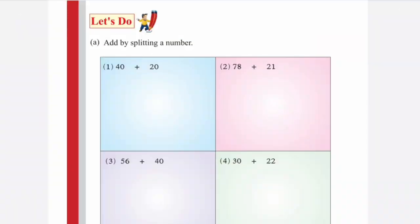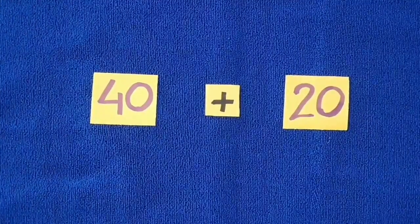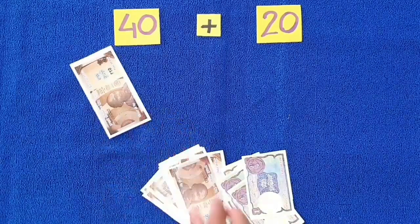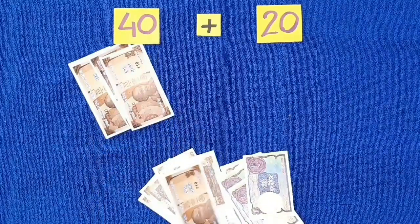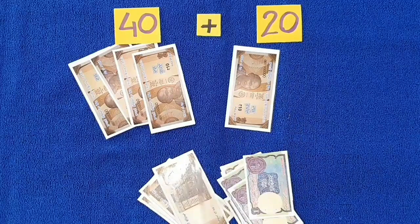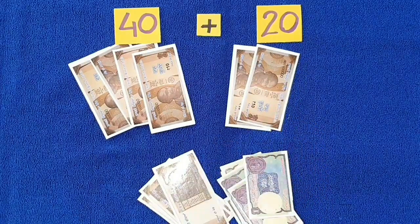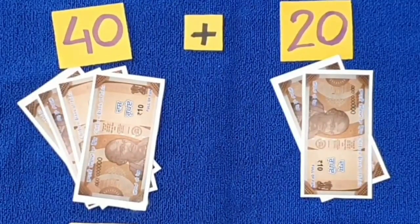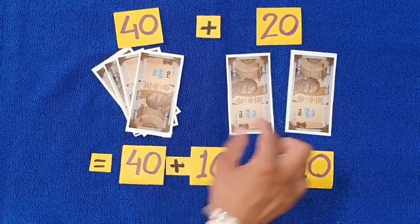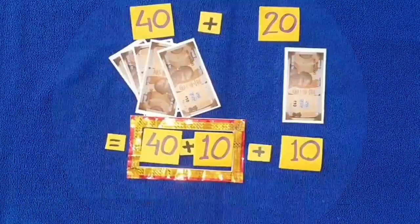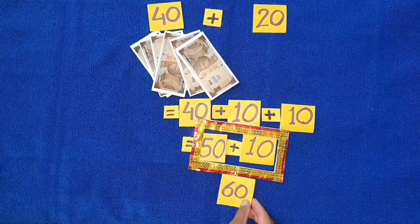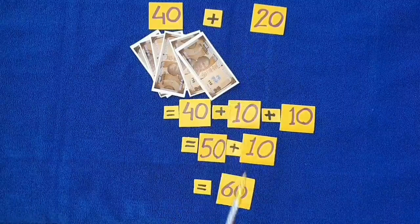Now we will do the exercise from page 62 of your book. In part A, 40 plus 20 — we have some currency notes here: 10, 20, 30, and 40. Four 10-rupee notes make 40. Two 10-rupee notes make 20. We can split 20 as 10 and 10. 40 and 10 make 50 rupees, and 50 rupees and 10 more make 60 rupees. So 40 and 20 make 60 rupees.